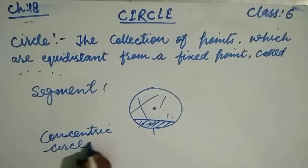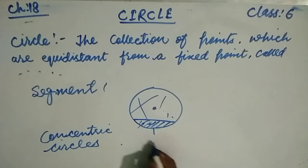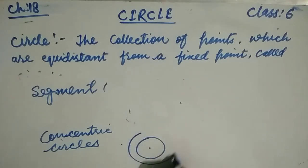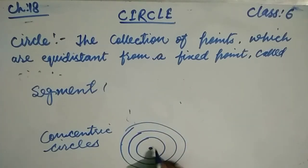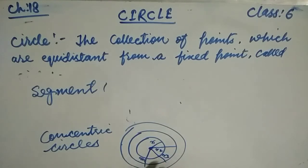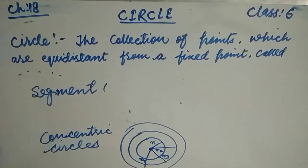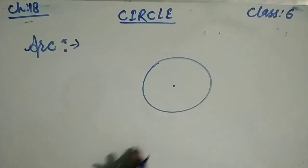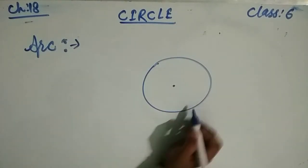Concentric circles are circles having the same center but different radii. So circles with the same center but different radii r1, r2, r3, r4 are called concentric circles.